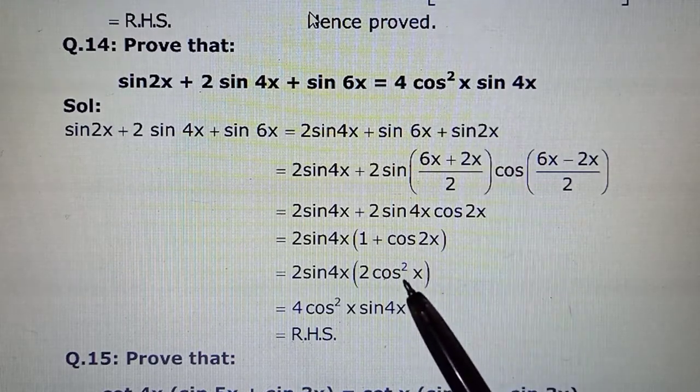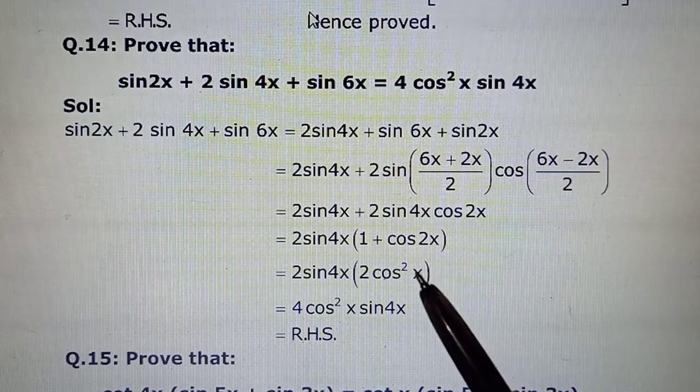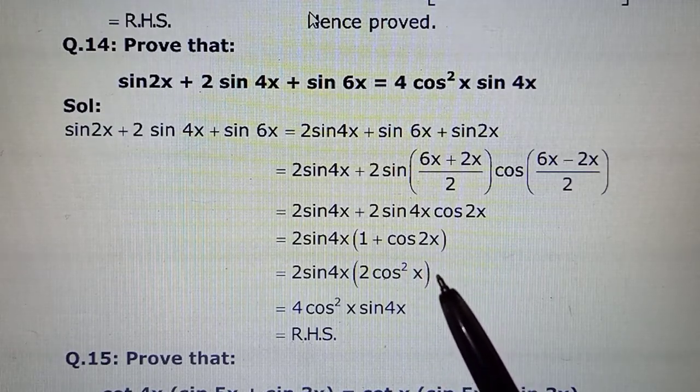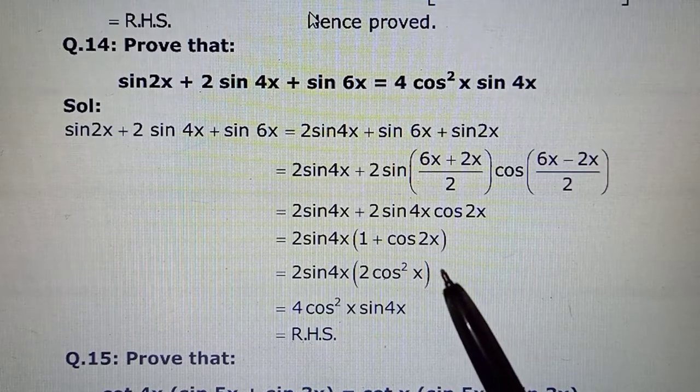So clearly yahaan par aapko dikhega hamein cos cos chahiye. You can choose your formula 2cos²x - 1. So -1 + 1 balance ho jayega.